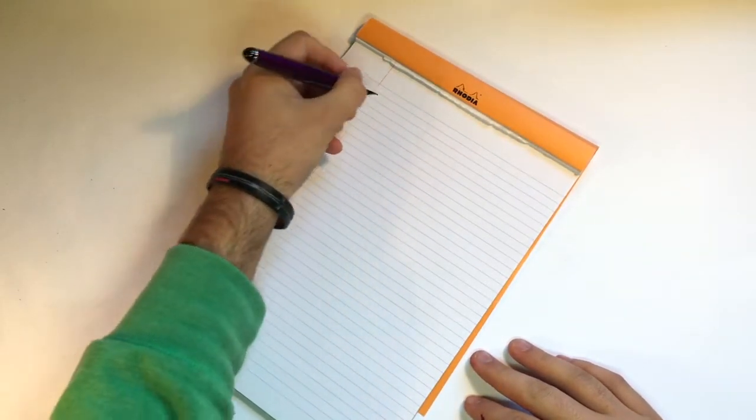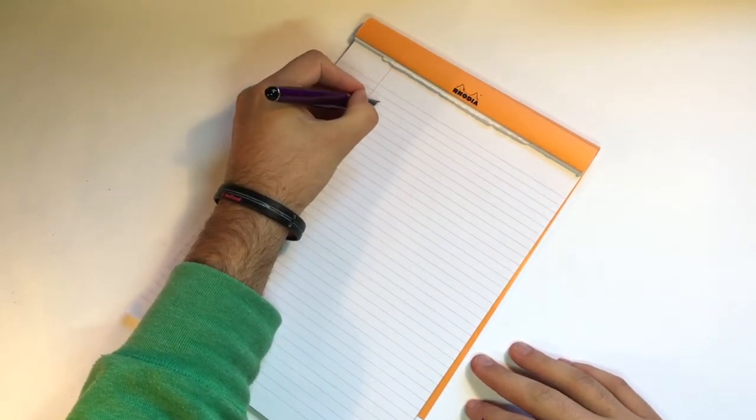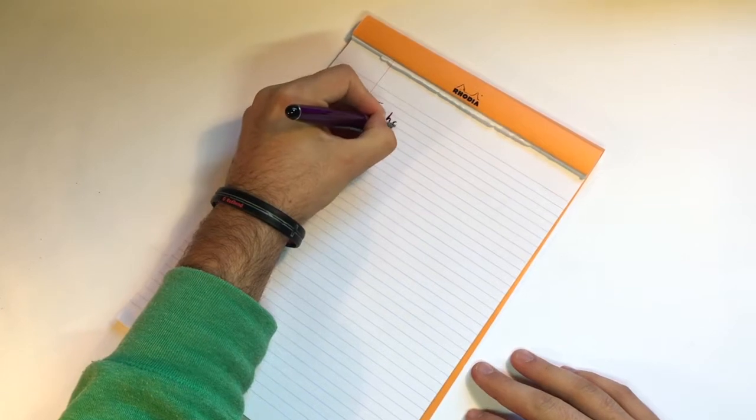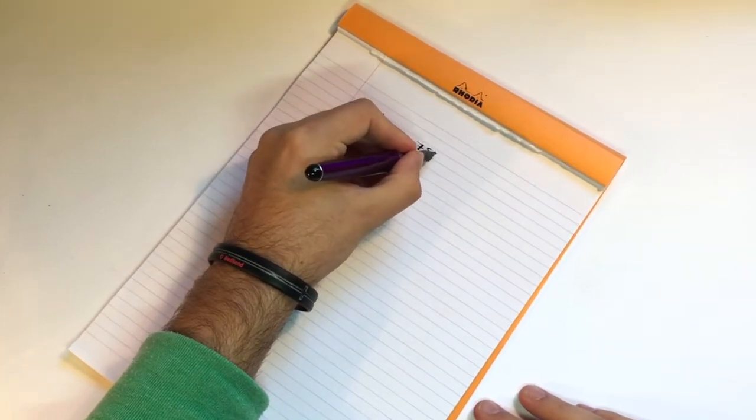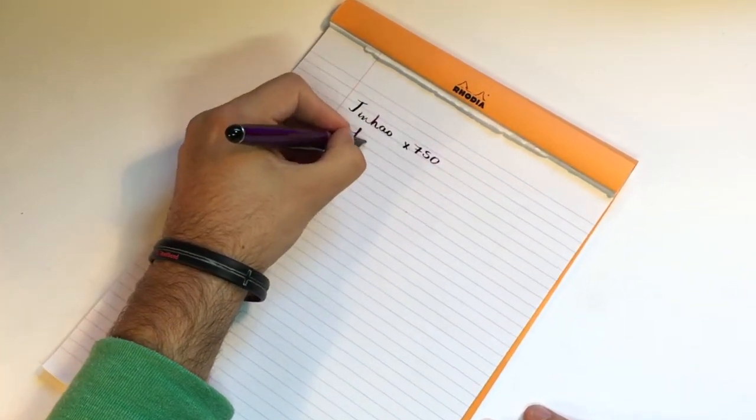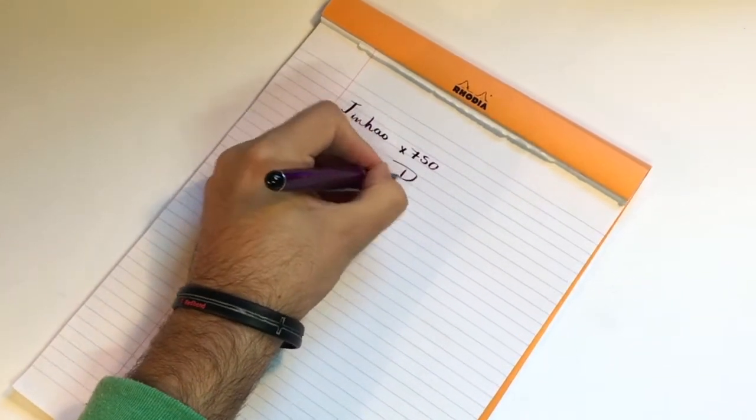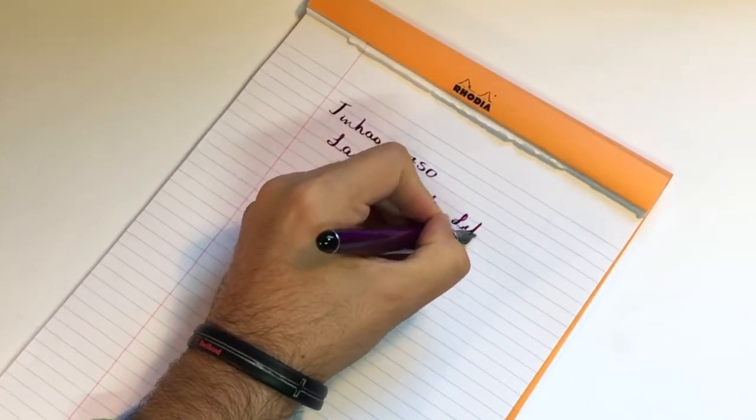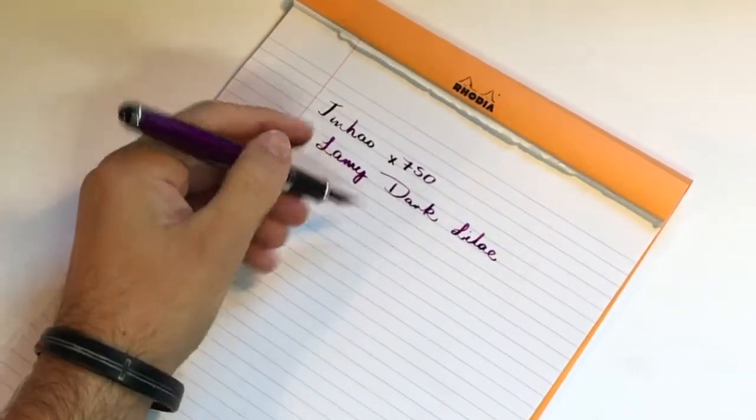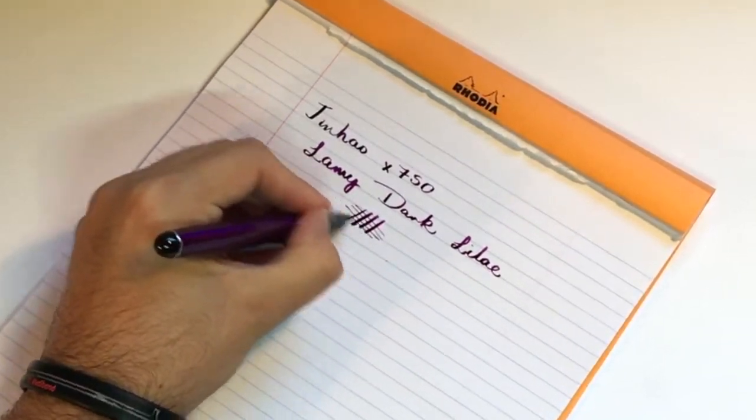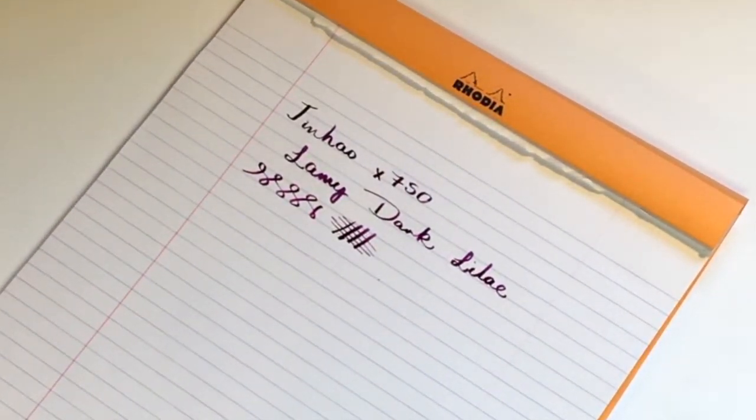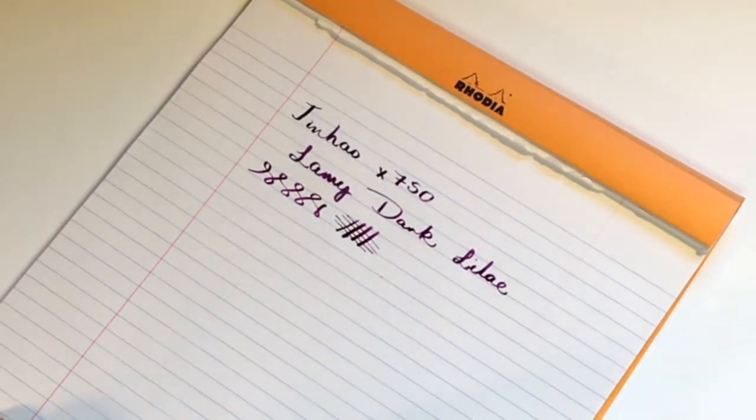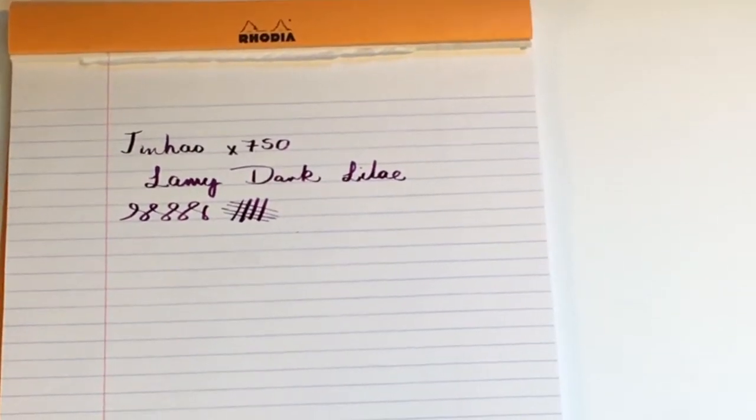I'm going to show you what a little writing sample looks like with this nib. So this is a Jin Hao X750 with Lamy Dark Lilac. Now obviously with this nib it is going to power through ink a lot quicker, but when it looks that good on the page I'm not really sure I mind. I really love this ink and in a nib like this it's just a lot of fun.